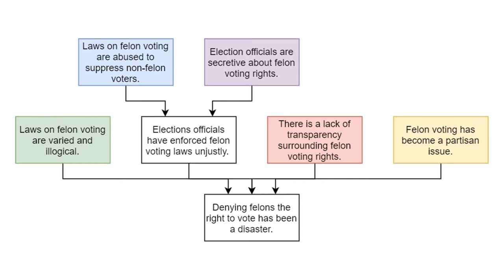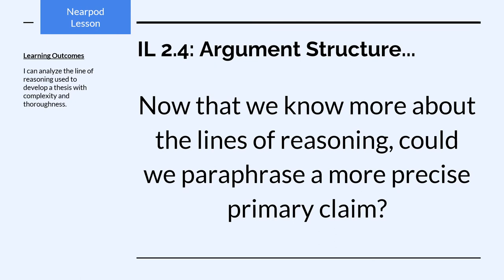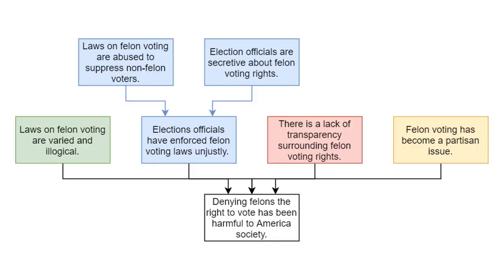So what I have now are four different lines of reasoning. And now that we have a clearer idea of what our lines of reasoning are, we can go back and paraphrase to make sure all statements are as precise as possible. I definitely want to start with the primary claim. Could we paraphrase a more precise version? That word 'disaster' is awfully vague. So what do they really mean? I think this is more precise: 'Denying felons the right to vote has been harmful to American society' — because calling it a disaster is a bit figurative, and we want to be as literal as possible when making an argument map.